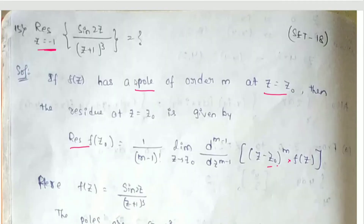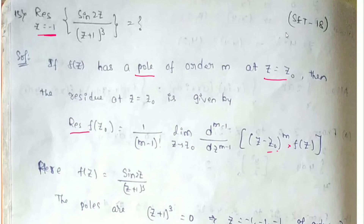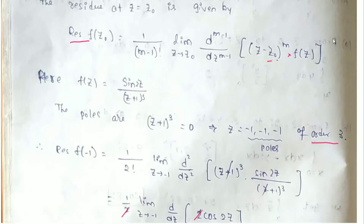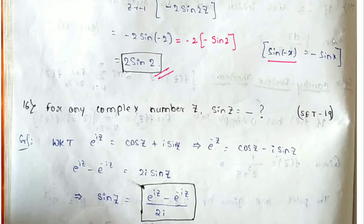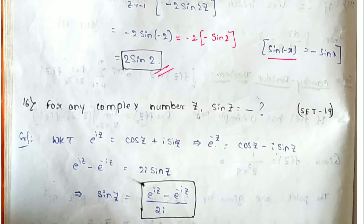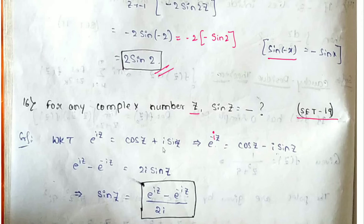Next question from the 19th paper: for any complex number z, find the value of sin(z). We know that e^(iz) = cos(z) + i·sin(z), and e^(−iz) = cos(z) − i·sin(z).